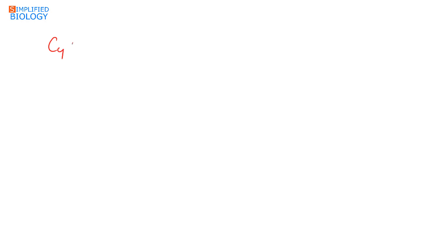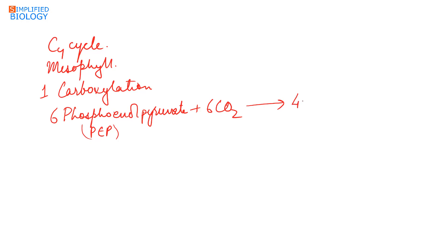The C4 cycle occurs in two cells, the mesophyll and bundle sheath cells. The process starts in the mesophyll cells. The first step is carboxylation. The initial receptor of carbon dioxide is a three-carbon compound, phosphoenol pyruvate. This phosphoenol pyruvate reacts with carbon dioxide to form the first stable compound, the four-carbon compound oxaloacetic acid, in the presence of enzyme phosphoenol pyruvate carboxylase. Oxaloacetic acid is immediately reduced to malic acid by NADPH.